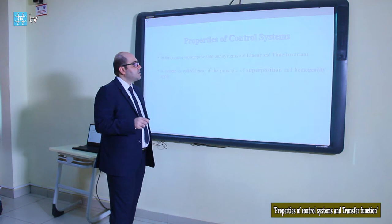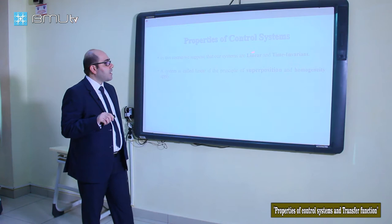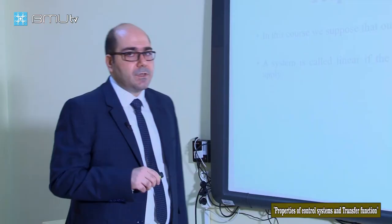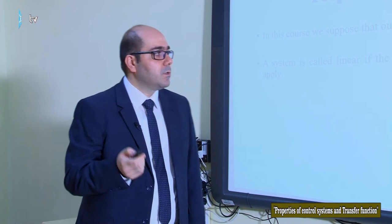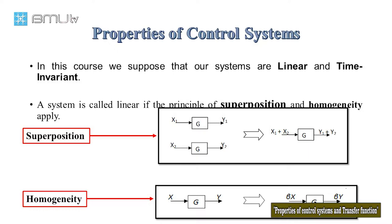Another property of the control system is linearity. What is the meaning of linearity, and which systems are linear? In the case of control systems, we say that a system is called linear if the principle of superposition and homogeneity apply. Let's talk about what superposition, homogeneity, and additivity mean.